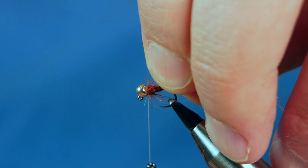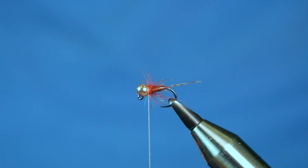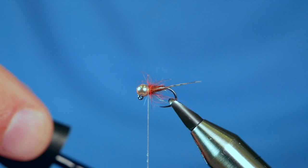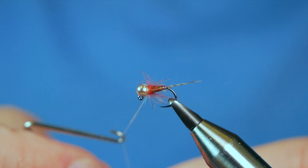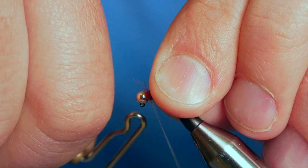Then to finish off, I'm going to add a little bit of super glue to my thread. Then come in with your whip finisher, three turns. And then you can just take away your thread. And the job's a good one.